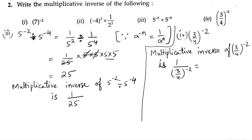Now we need to remove the minus in the power. If we remove the minus power, this whole number comes into the denominator — that means it brings upside as 4 by 3. Since the power is negative, to remove that negative we can directly bring it upside. That is, 4 by 3 whole squared. 3 squared is 9 and 4 squared is 16, so the final answer is 16 by 9. 16 by 9 is the multiplicative inverse.